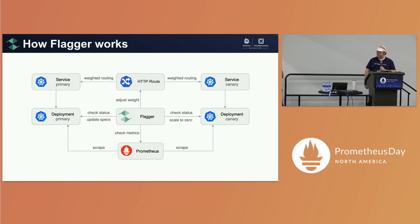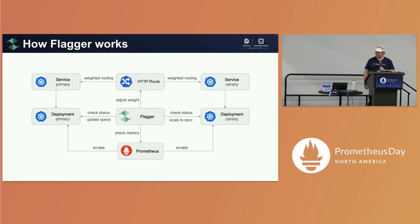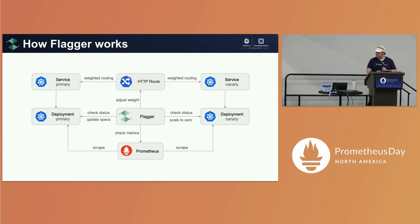Flagger orchestrates this HTTP route to route traffic based on weights to the two deployments, and checks the metrics based on those metric validations to drive the analysis forward. That's in a nutshell how Flagger works — we'll understand more when we see the demo.